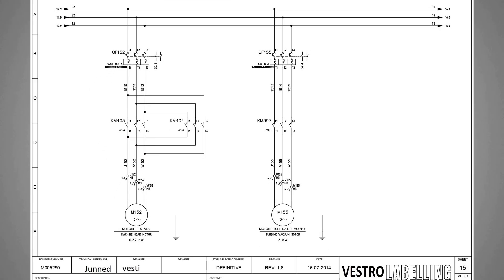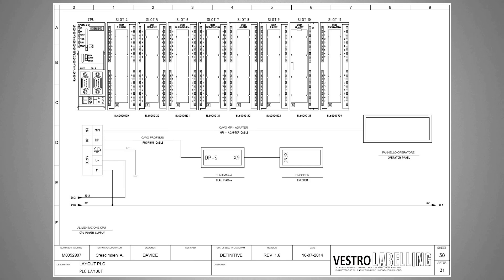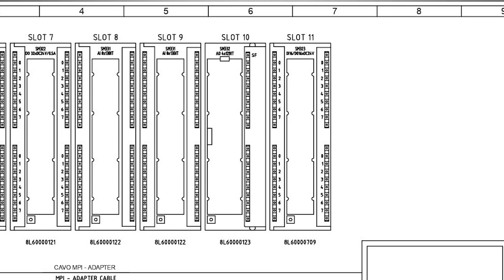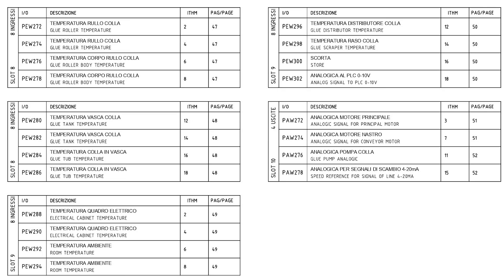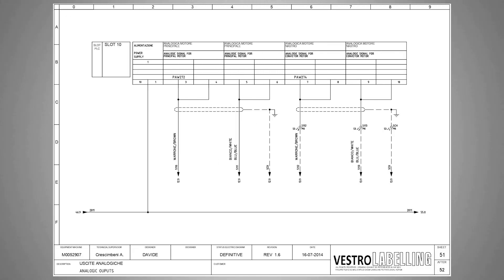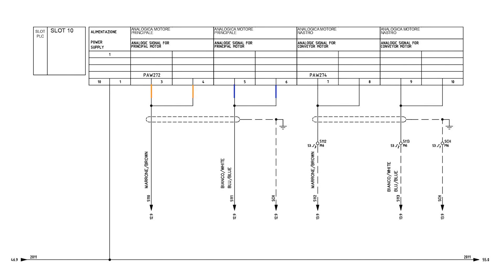Going back to the PLC layout diagram, the analog output card with four analog outputs is installed at slot number 10 of the rack. To see the details of this card we go to sheet number 8, where all analog input and output cards are mentioned. The slot 10 card has four analog outputs. If we want to see the wiring for the first analog output PAW272 — which is the analog signal for the VFD — we go to page number 51.